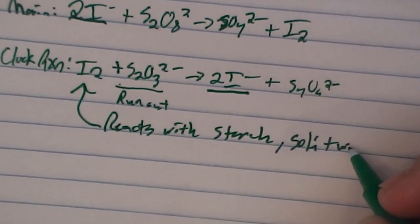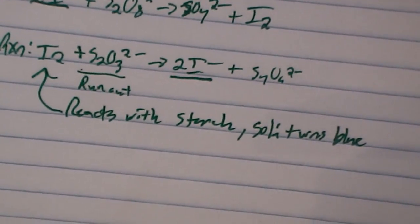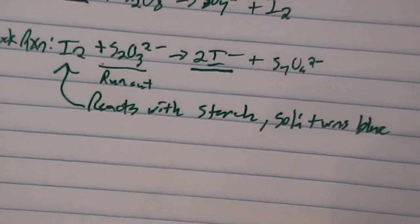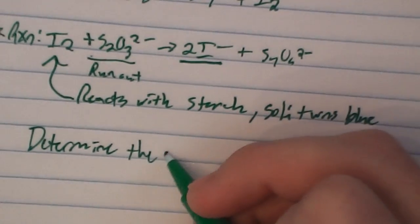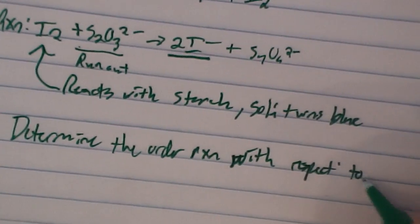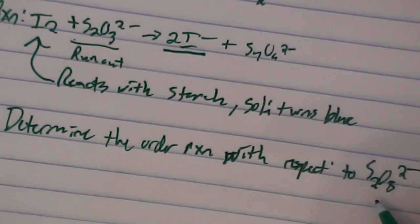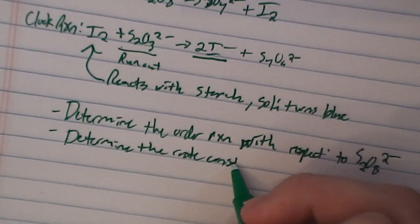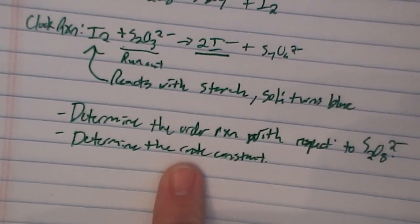The objective is to observe this reaction under various conditions. We're going to change the concentration specifically and determine the order of reaction with respect to persulfate (S₂O₈²⁻). After we've determined that, we will then determine the rate constant for the experiment. So there are two parts: first determine the order of reaction, and then determine the rate constant.